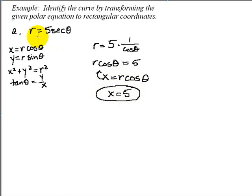So the equation R equals 5 secant θ when graphed in the polar coordinate system would be the same as the graph X equals 5, a vertical line, when graphed in the rectangular coordinate system.